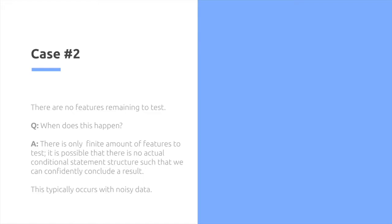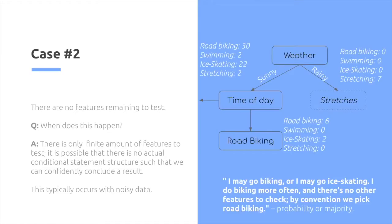For the second case, there are no features remaining to test. There can be a finite amount of features to test, and it's possible that there's no actual conditional statement structure, so that we can confidently conclude a result. This typically occurs with noisy data. For example, I can look at the weather, then I can look at the time of day, but then after time of day, I have nothing else to check, I have no other features in my data.